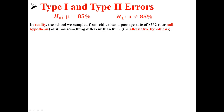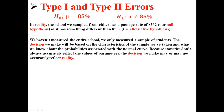In reality, the school we sampled from either has a passage rate of 85%, which is our null hypothesis, or it has something different than 85%, which is our alternative hypothesis. We haven't measured the entire school — we only measured a sample of students. The decision we make will be based on the characteristics of the sample and what we know about the probabilities associated with the normal curve. Because statistics don't always accurately reflect the values of parameters, the decision we make may or may not accurately reflect reality.